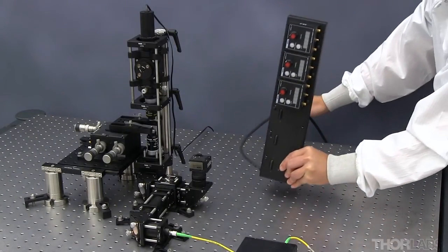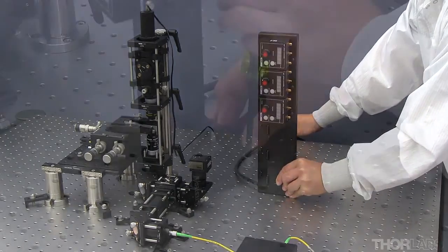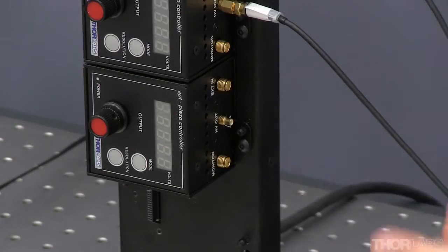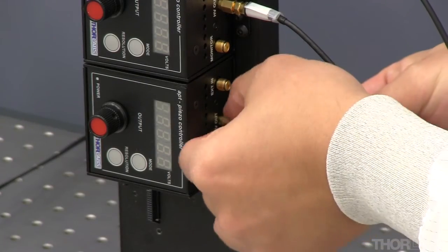Place the T-Cube hub on the table out of the way of the OTKB system and secure it to the table. Plug in all the appropriate cables and power cords.